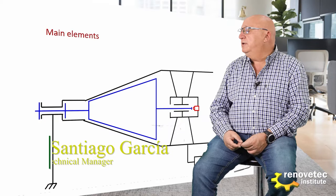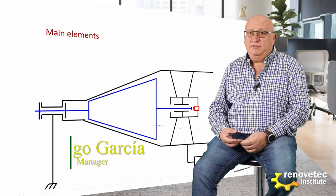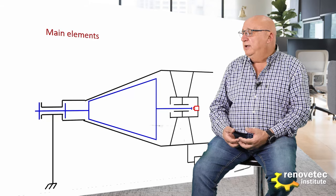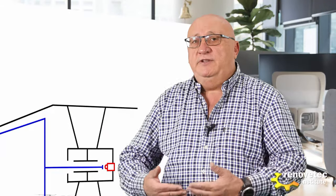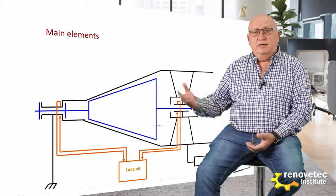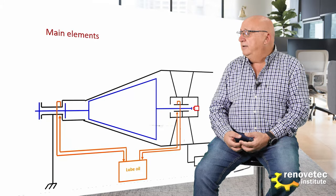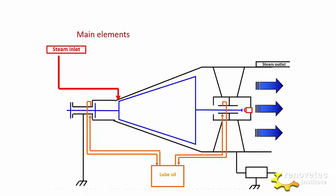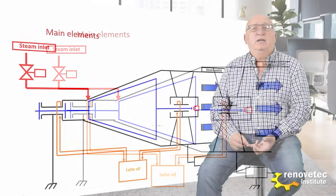A sensor is important because it measures the expansion of the shaft and also the expansion of the casing, and indicates whether this expansion is occurring correctly. The lube oil system is an auxiliary system of the turbine that allows lubrication of the bearings. The mechanisms that allow inlet and outlet of steam are also key parts of the steam turbine. At the inlet, normally we have two valves.